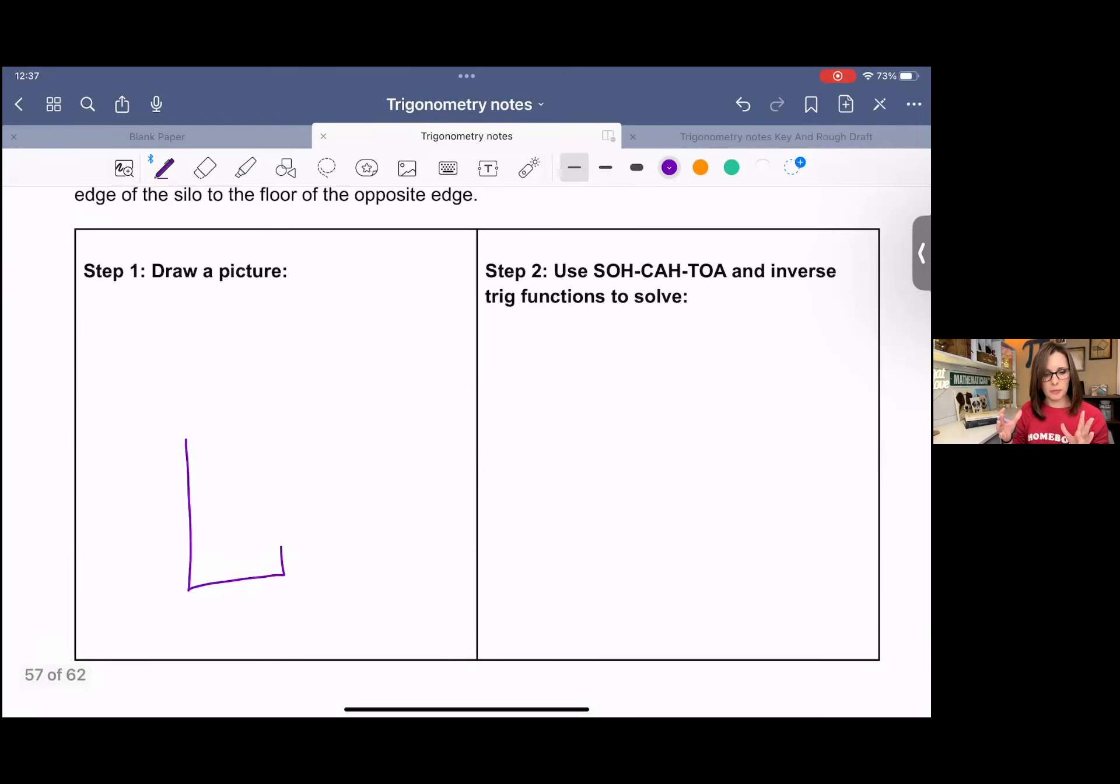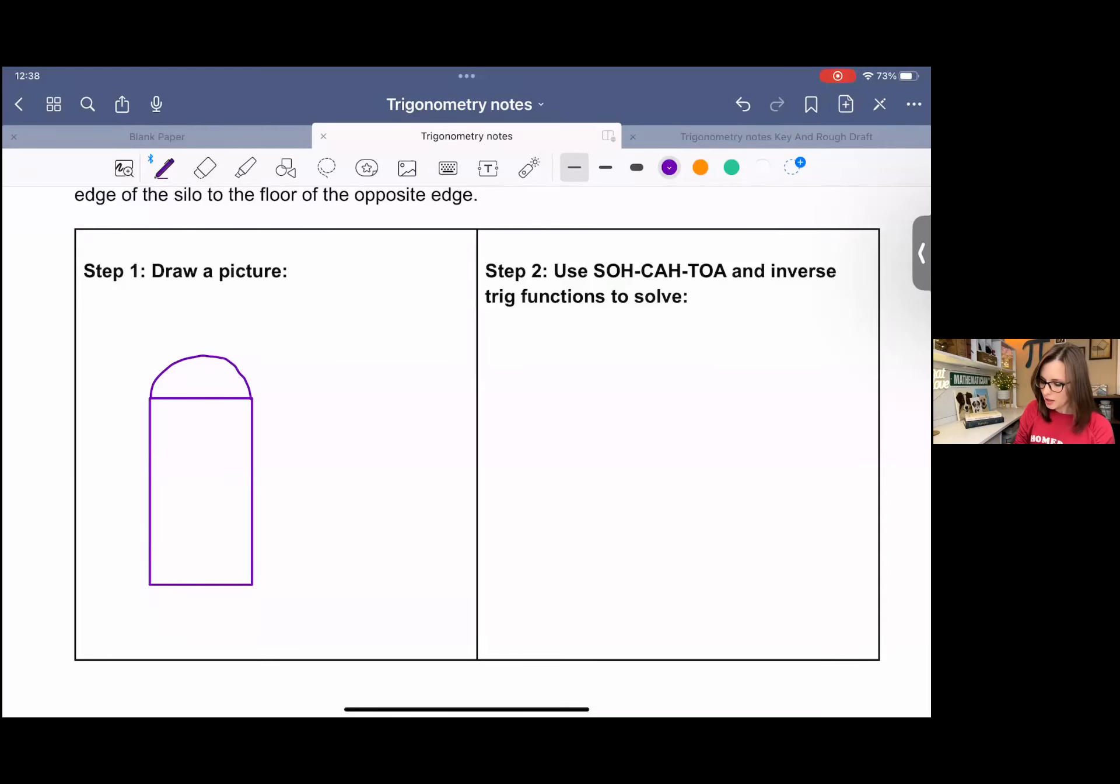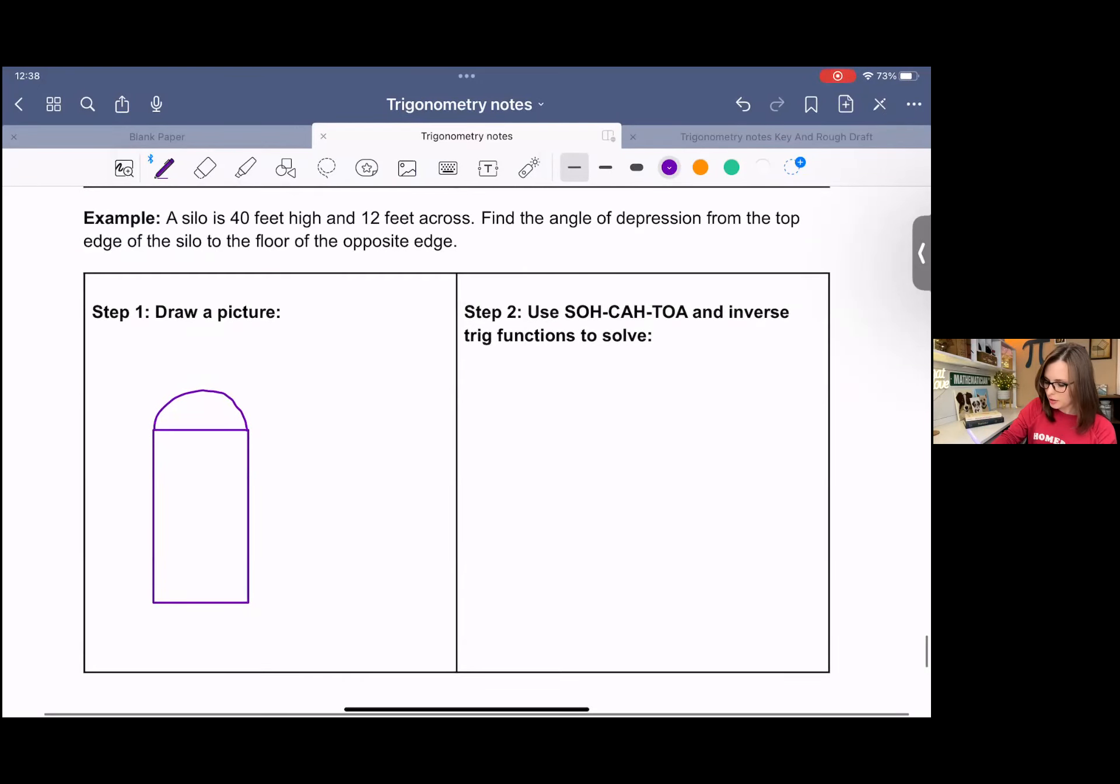You could just draw a rectangle if you want to. You don't have to draw the whole thing. So it says that the silo is 40 feet high and 12 feet across. We could have put the 40 on this side and the 12 here. It doesn't really matter. It's the same. But I put them on this side because it's going to kind of help us with the next part.